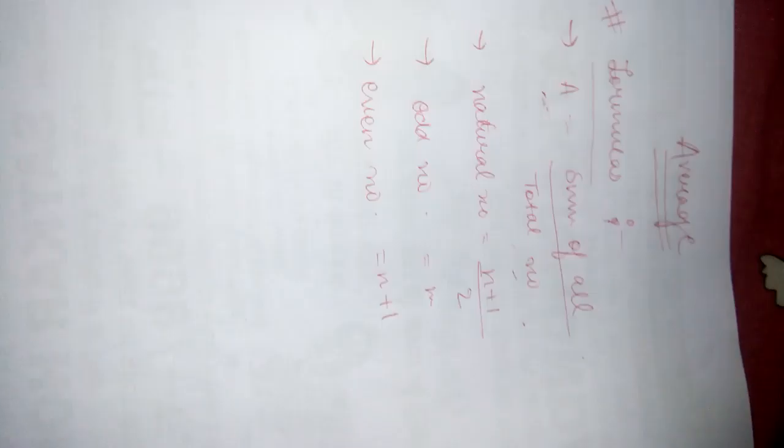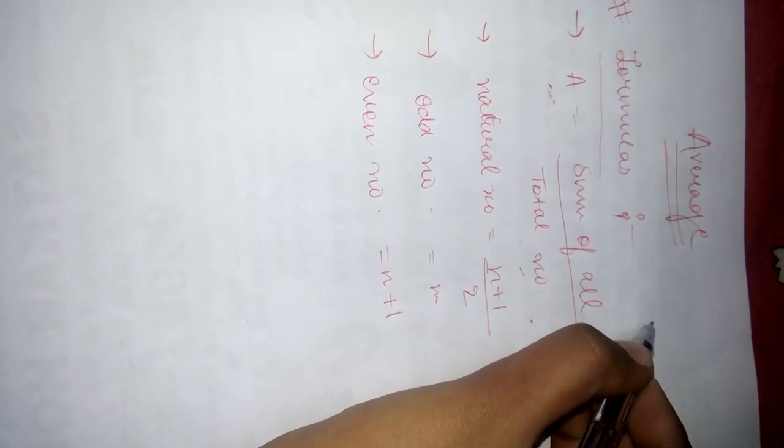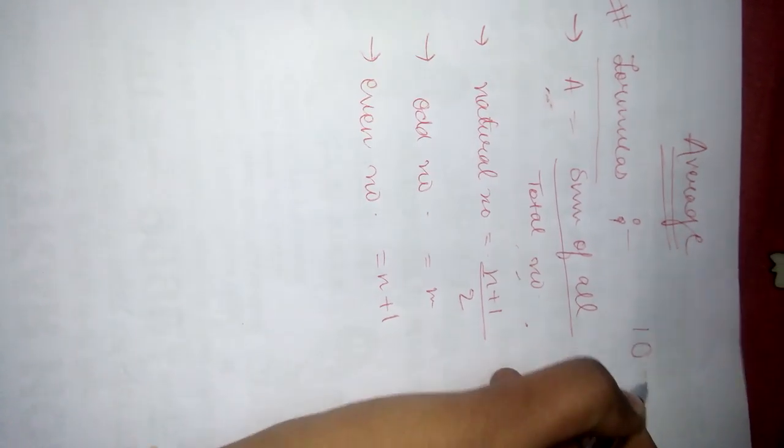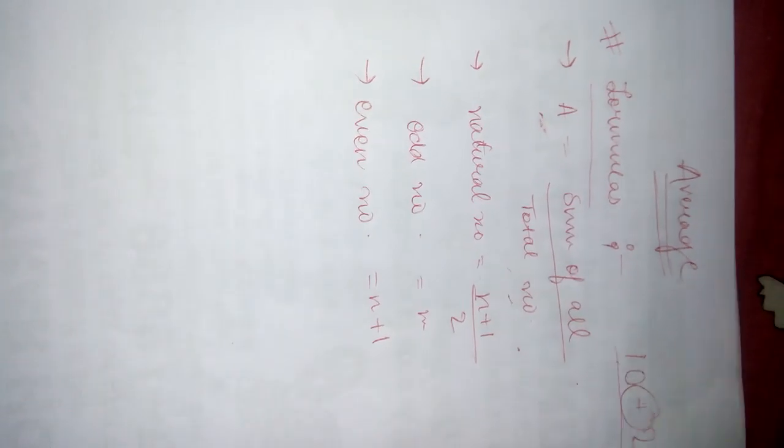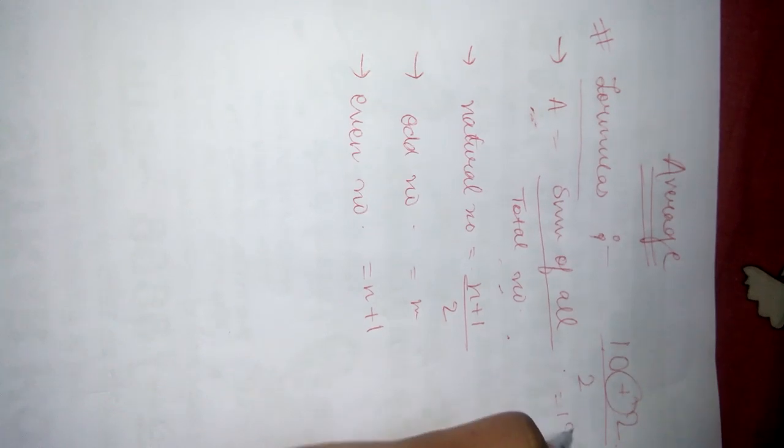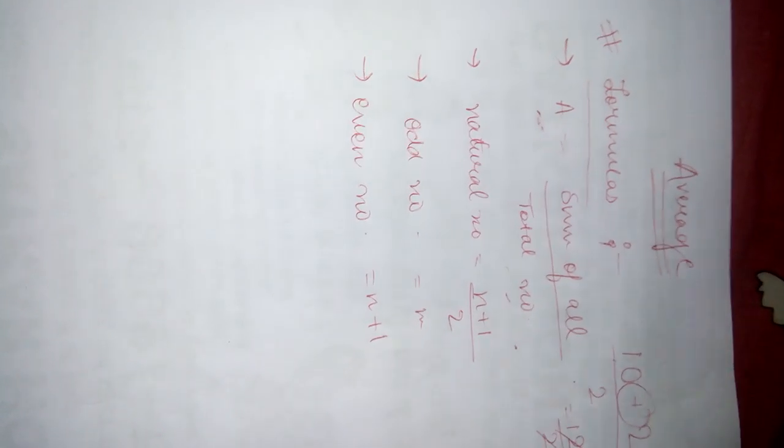Means, if you have given two things, first value is 10 and second value is 2. So you are going to add both of them and upon total number is 1 and 2. The average will be 12 by 2 that is 6.